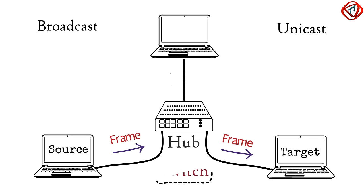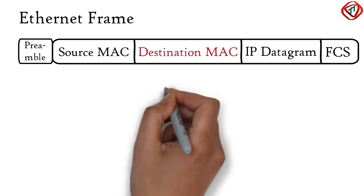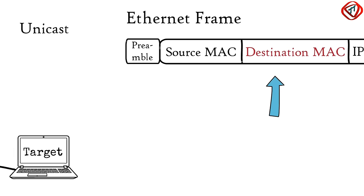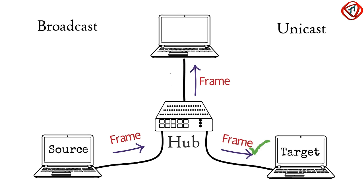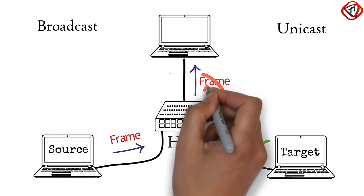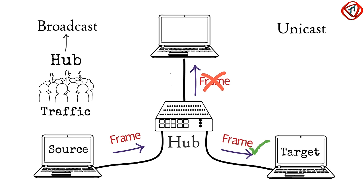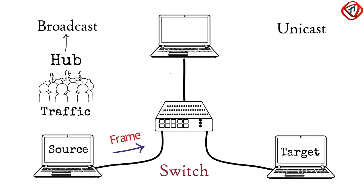If the central device is a hub, it broadcasts the received frame to all connected computers — a hub is a multiport repeater. The frame has a destination MAC address unique to every computer, so only the target computer accepts the frame and others reject it. Since a hub broadcasts the received frame, it increases unnecessary data traffic in the network. To overcome this limitation, a switch is used as the central device.